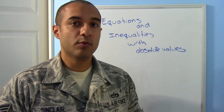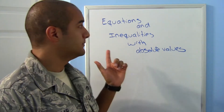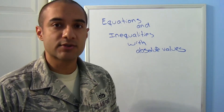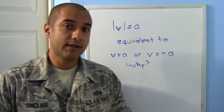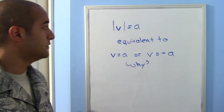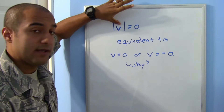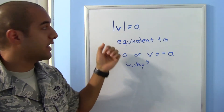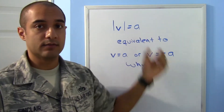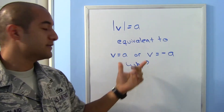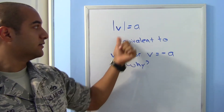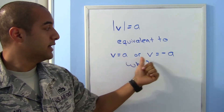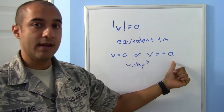Welcome back. Today we'll be looking at equations and inequalities with absolute values. We're given v, where the absolute value of v is equal to a, a real number. That's the same as saying that v is equal to a, or v is equal to negative a.